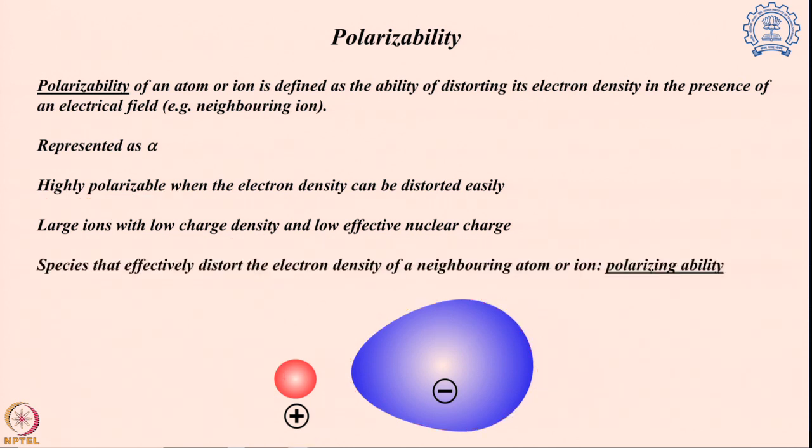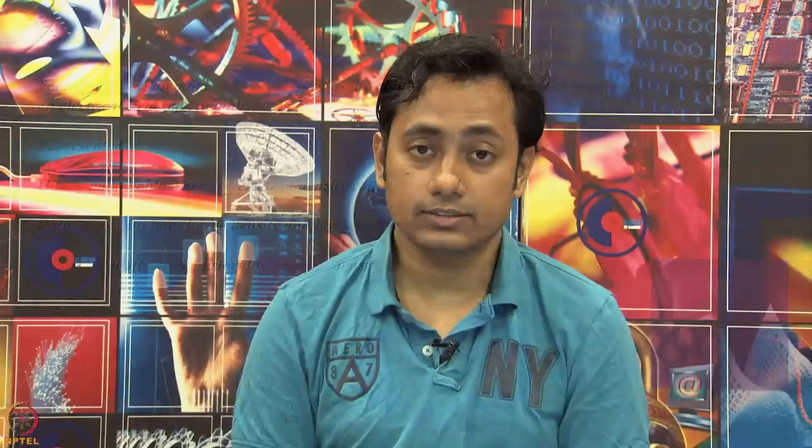A highly polarizable system is one where the ions are larger in size, have very low charge density and low effective nuclear charge, so the control over the electron density from the nucleus is pretty low. That is why another electric field coming from a neighboring ion can still control that electron density. Not only the presence of electron density but a very weak control from the nucleus itself is the main reason for a highly polarizable system.